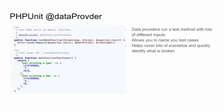Another great PHPUnit feature is the data provider annotation syntax. This allows you to create a method which returns an array of test cases, and those test cases are passed into the test method which specifies the @dataProvider annotation. Here we've got two test cases — one printing a year and one printing a day using PHP's date function — making sure that PHP's date function works correctly.